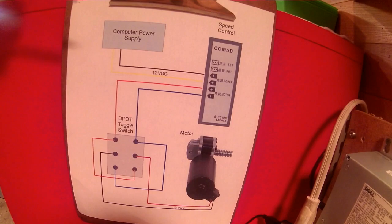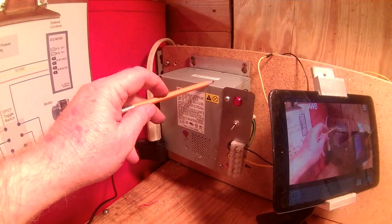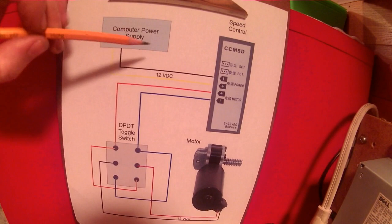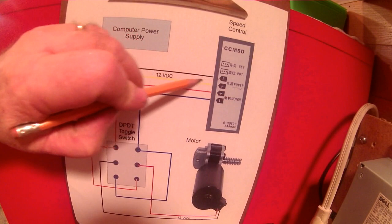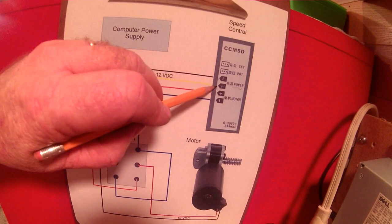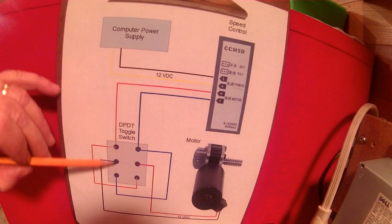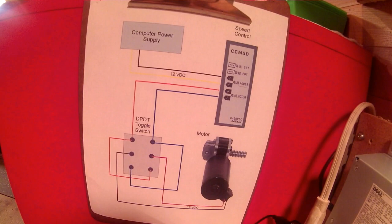This is our power supply — the one I built out of an old computer power supply. A negative wire off of that goes to our speed control. The backside of the speed control has terminals labeled 'power' and 'motor.' The negative from the power supply is a black wire, and the positive is a yellow wire at 12 volt DC. I'll give you a moment to pause the video and take a screenshot of this wiring diagram if you'd like to follow along.